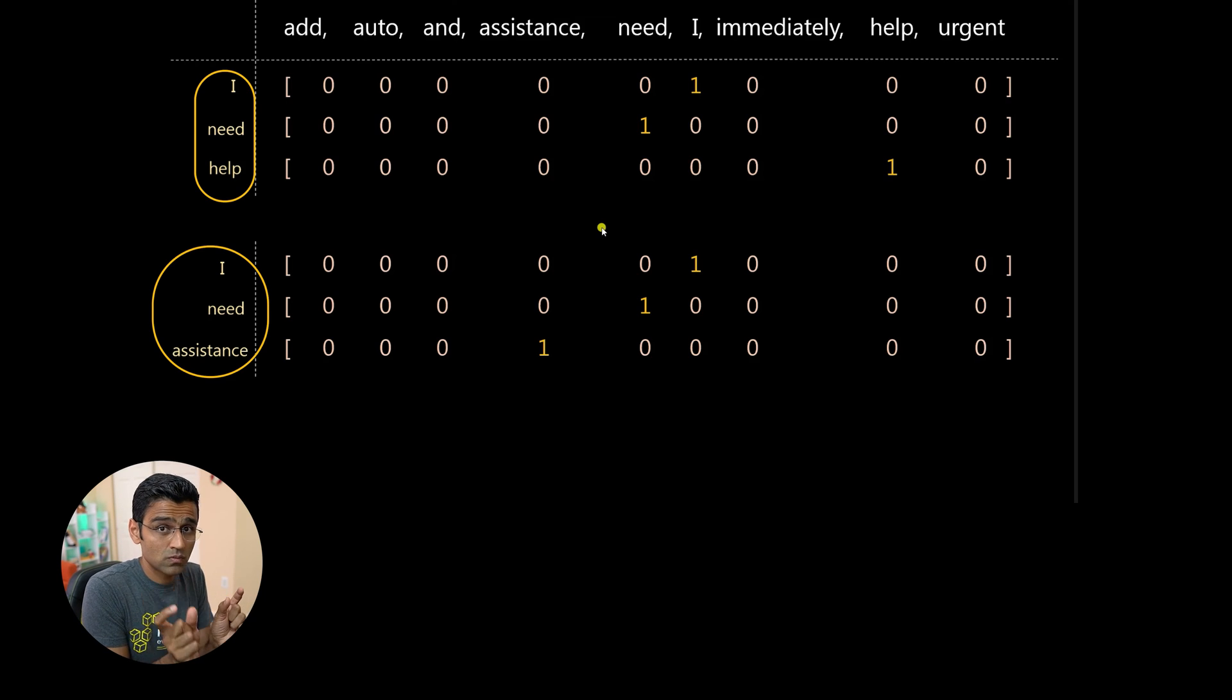So if I have a similar representation of these two words, it will help me. But here see, this one hot encoding is kind of dumb because it just looks at the position of a word and puts one there. So if you look at these two vectors, help and assistance, they are very different.